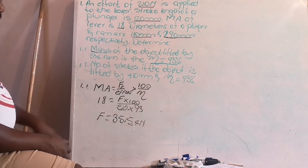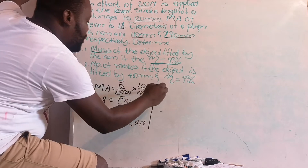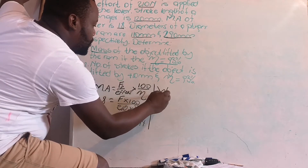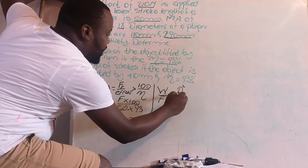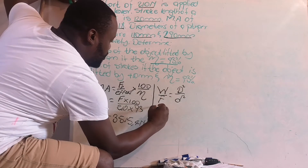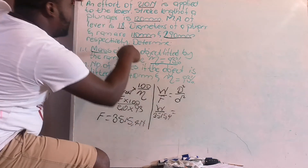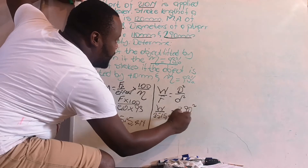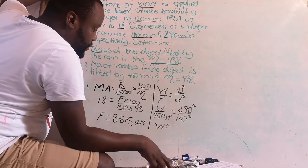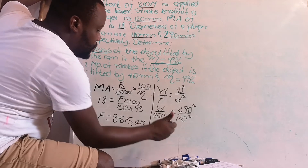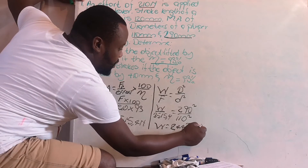Once you have your force of the plunger — which comes out to 3,515.4 N — you put it into the equation for the weight of the ram. Weight of ram over force of plunger equals diameter squared of ram over diameter squared of plunger: W divided by 3,515.4 equals 290 squared over 110 squared.